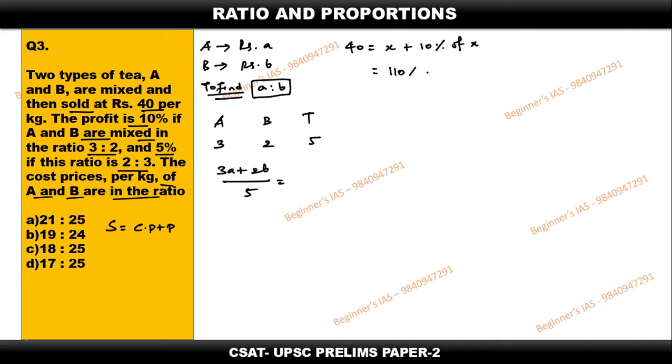Therefore here the total is 110 percent of x. 110 percent of x which is equal to 40, so this is nothing but 110 by 100 into x equals 40. Then find out the value of x: x is equal to 40 into 100 by 110.